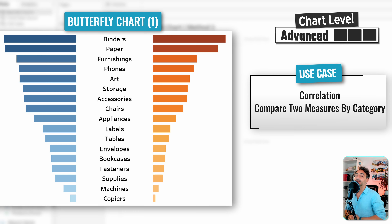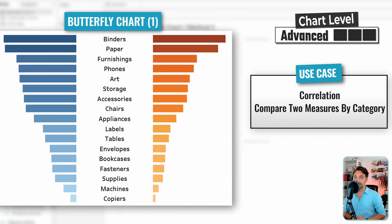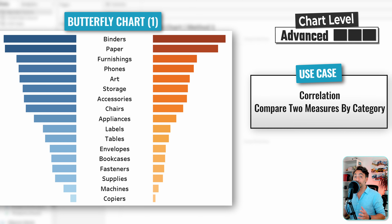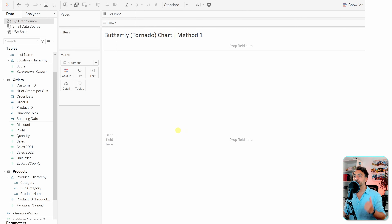Now we have the butterfly chart, also called the tornado chart. It is a great chart in order to analyze two different measures by a specific dimension. For example, if you want to compare the number of customers with the number of orders by category, then the butterfly chart is your chart.